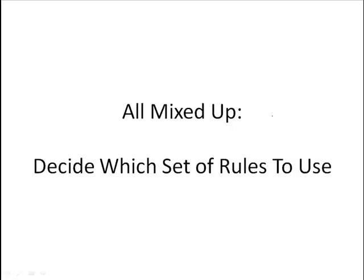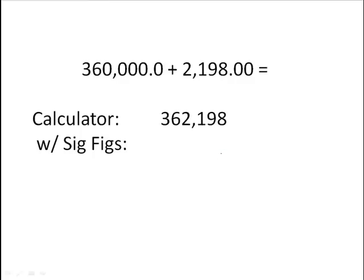Now these guys are all mixed up. For some reason, kids have a hard time when they are all mixed up like this. The first thing you need to do is look at what's being done. What operation is taking place here? Is it addition, subtraction, or is it multiplication, or division? And then decide for yourself which set of rules. Numbers to the right of the decimal, or are you looking at all the sig figs and coming up with a grand total?